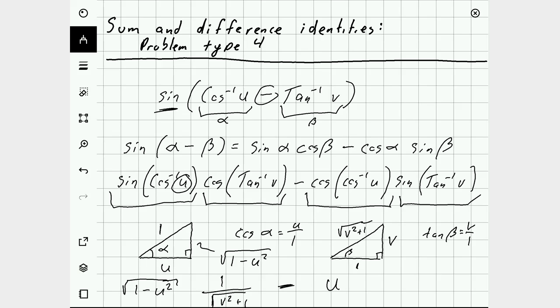And using that triangle to calculate the sine is going to give me v over the square root of v squared plus 1. So that's where these four terms are coming from.